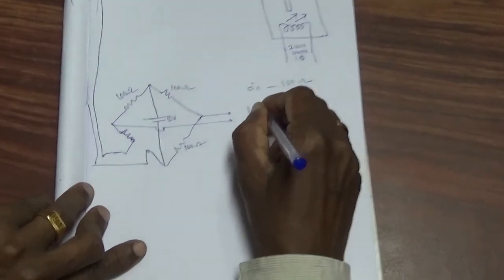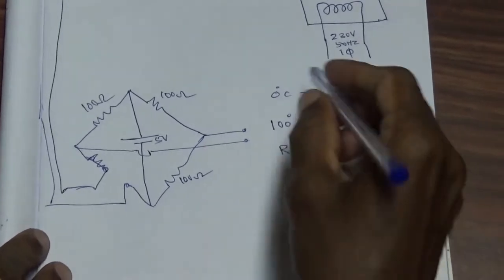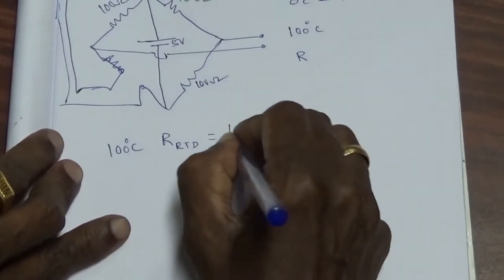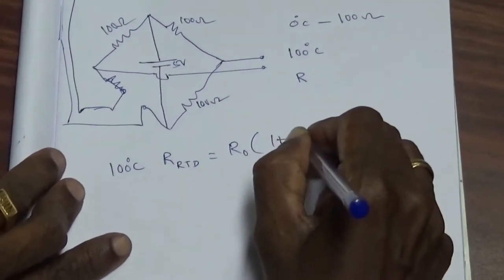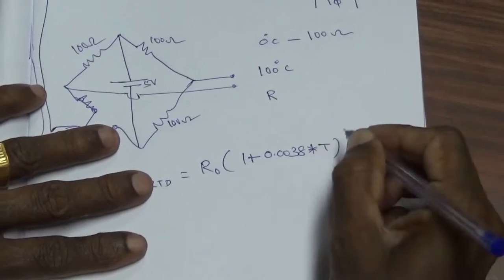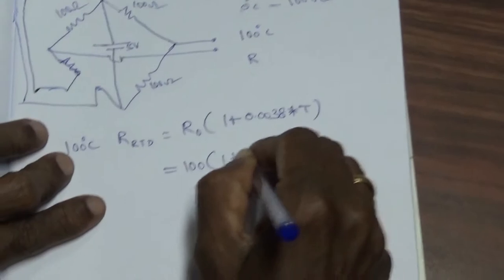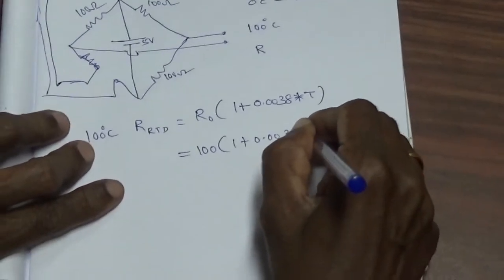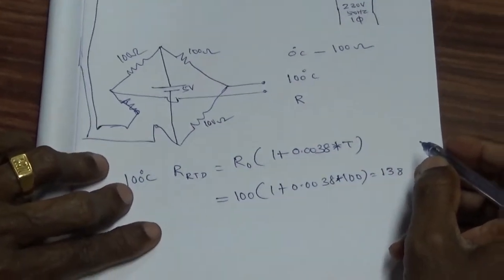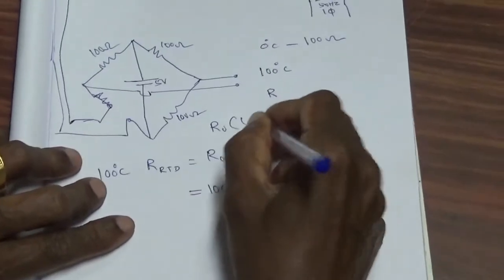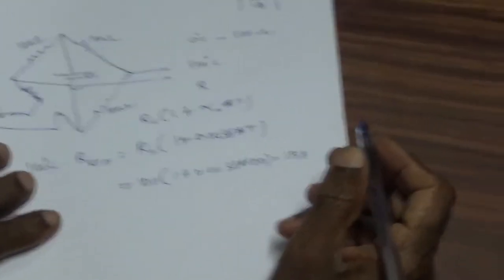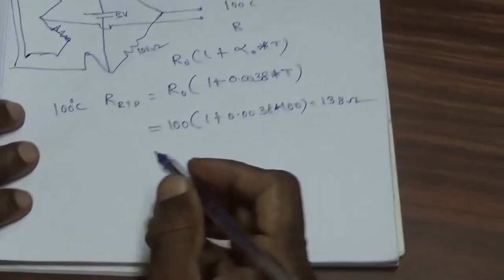At 100 degrees centigrade, the resistance of the RTD equals R₀ multiplied by (1 + 0.0038 × T). That is 100 ohms multiplied by (1 + 0.0038 × 100), which equals 138 ohms. The formula is R = R₀(1 + α₀T), where α₀ for the RTD is 0.0038, giving us 138 ohms.